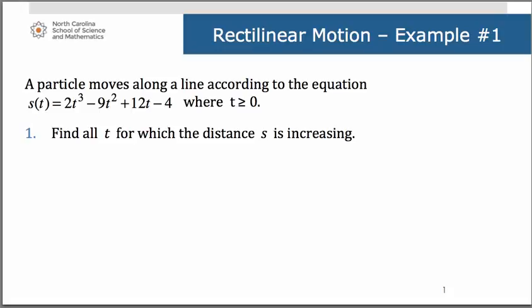Let's look at an example of a rectilinear motion problem. In this case we have a particle that moves along a line according to the equation s of t equals 2t cubed minus 9t squared plus 12t minus 4. Let's take a look at the graph of that so we can get a sense of the path that this particle is following. It is of course a cubic equation.